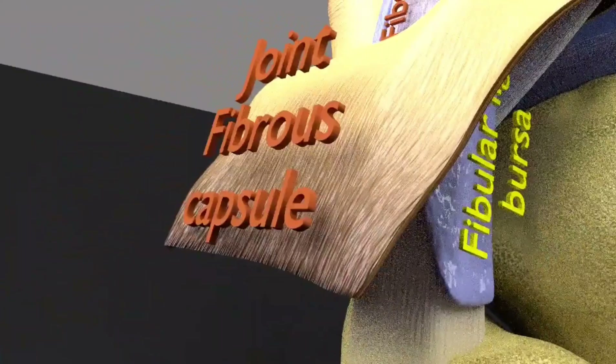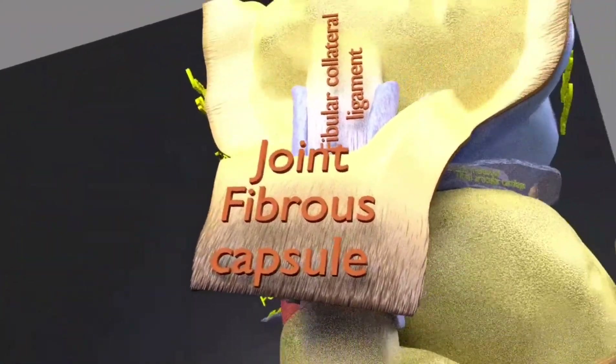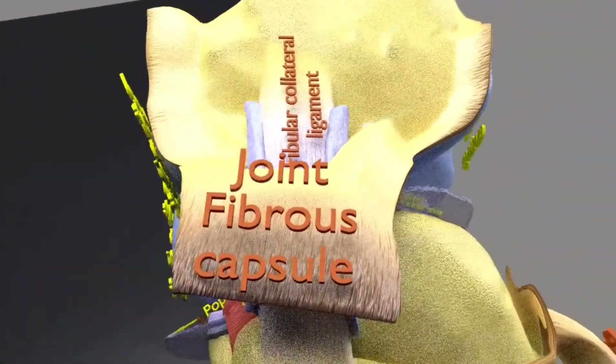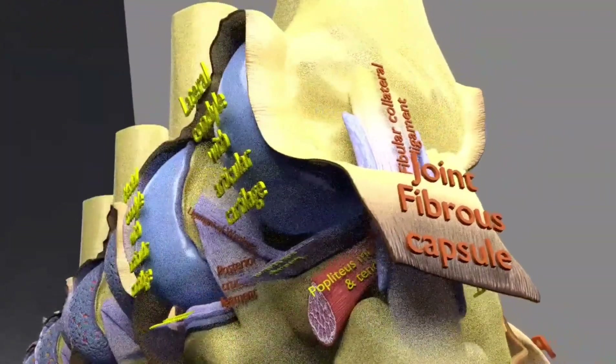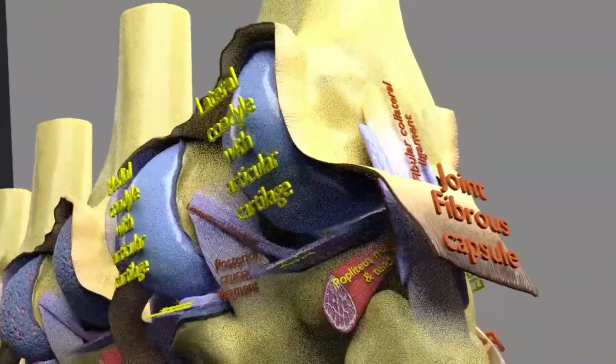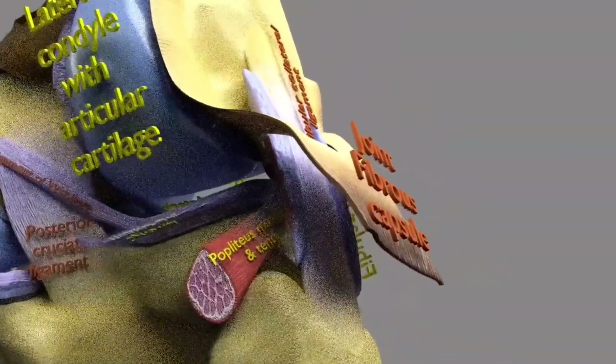Three bones meet and move against each other at the knee joint. The bottom of the femur meets with the top of the tibia. The patella glides along a groove located at the bottom and front of the femur.